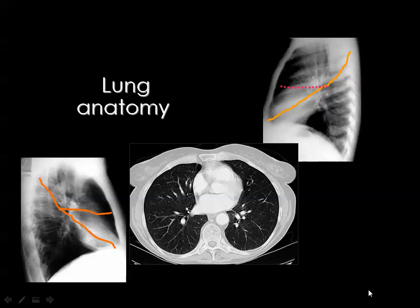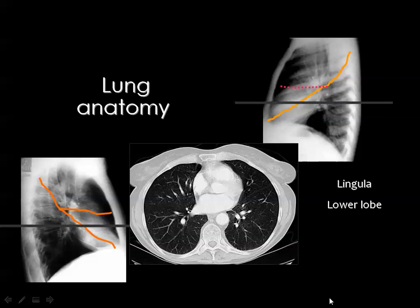Going lower — at the level of the heart — on the left side you see the lingula anteriorly and the lower lobe posteriorly; on the right side you see the middle lobe anteriorly and the lower lobe posteriorly. The lingula and middle lobe each represent approximately one-third of the thoracic diameter. A line dividing the thoracic cavity into anterior one-third and posterior two-thirds: the anterior one-third on the left is the lingula, on the right is the middle lobe, and the posterior two-thirds represents the lower lobes.